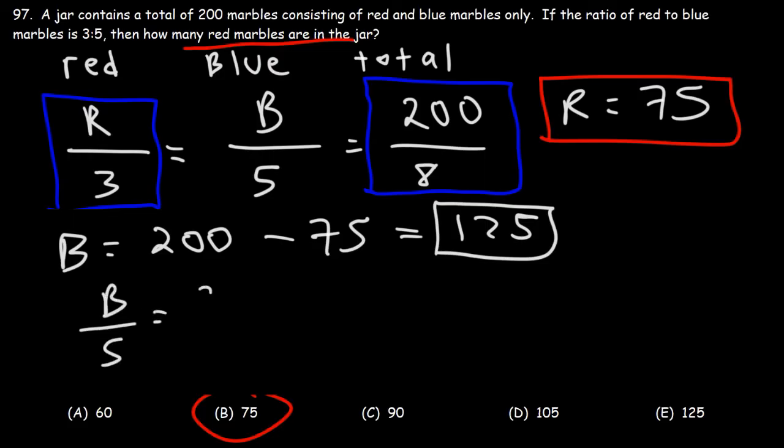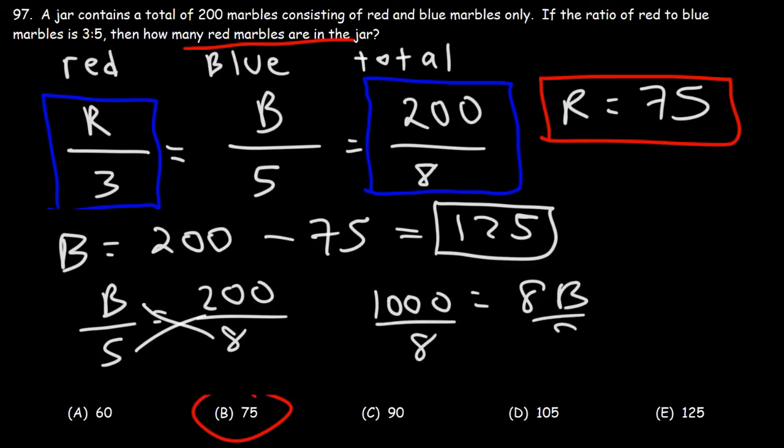So if we set B over 5 equal to 200 over 8, this is going to be 5 times 200, which is 1000, and that's equal to 8 times B. Divide both sides by 8. This becomes 1000 divided by 8, which gives us 125. So that's how you can calculate the number of blue marbles. But as we said before, answer choice B is the correct answer for the number of red marbles.